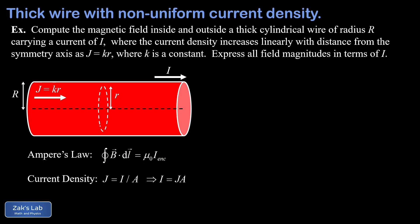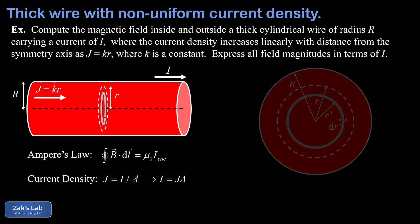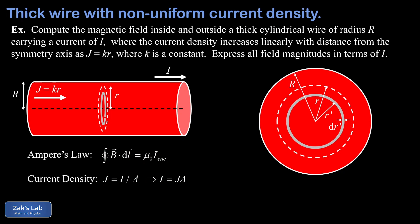What we need to do to find the enclosed current is to slice the area into thin rings so that j has a well-defined value over the area within the width of each ring. In the face-on view we see our Ampere loop of radius little r inside the wire, which has a radius of big R, and we're breaking the area inside the Ampere loop into thin rings of radius r prime — the prime distinguishes this from the other little r — and each ring has a thickness dr prime.